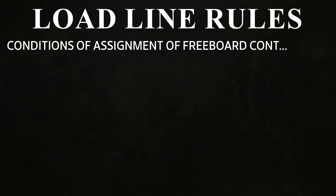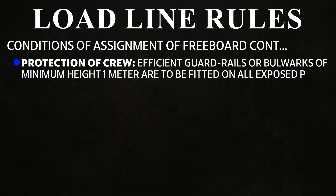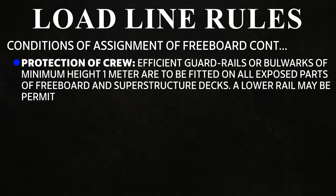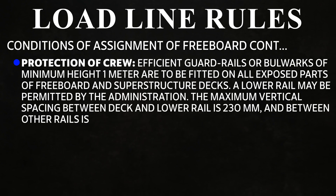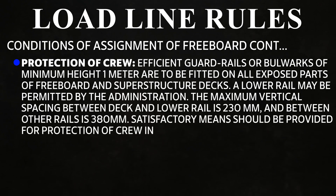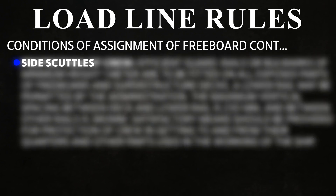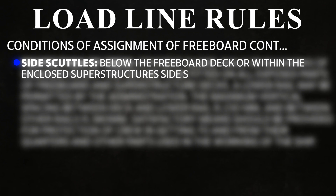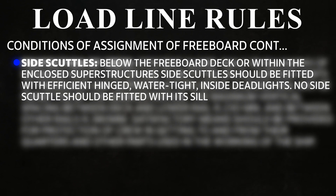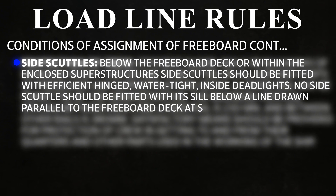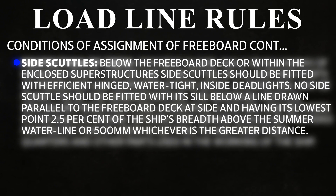Protection of crew: efficient guard rails or bulwarks of minimum height one meter are to be fitted on all exposed parts of freeboard and superstructure decks. A lower rail may be permitted by the administration. The maximum vertical spacing between deck and lower rail is 230 mm, and between other rails is 380 mm. Satisfactory means should be provided for protection of crew getting to and from quarters and working parts of the ship. Side scuttles below the freeboard deck or within unclosed superstructures should be fitted with efficient hinged watertight inside dead lights. No side scuttle should have its sill below a line drawn parallel to the freeboard deck having its lowest point 0.5% of the ship's breadth above the summer waterline or 500 mm, whichever is greater.